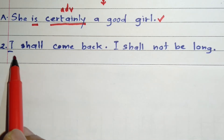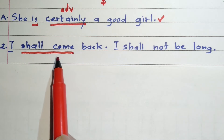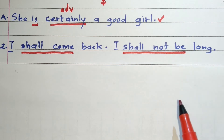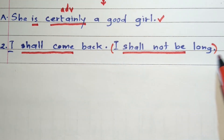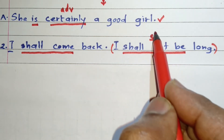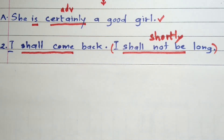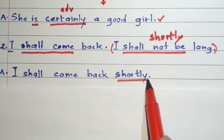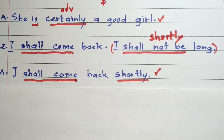Next example: I shall come back. I shall not be long. In the first sentence, 'shall come' is the finite verb. In the second sentence, 'shall not be' is the finite verb. We have to eliminate one sentence, that is, one verb. Instead of 'I shall not be long,' we can use one word — the adverb 'shortly.' So our answer will be: I shall come back shortly. Here 'shortly' is the adverb, and 'shall come' is the only finite verb, and therefore our sentence is a simple sentence.